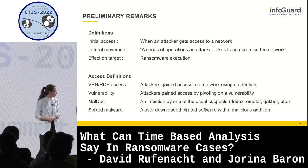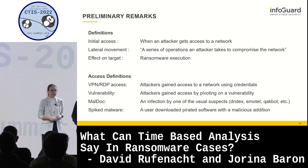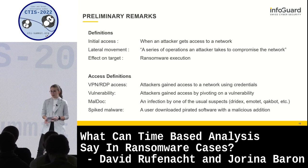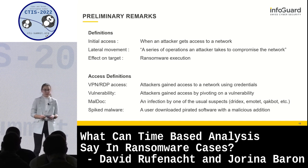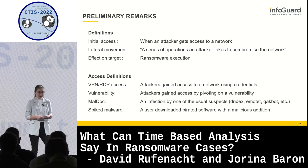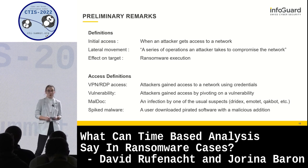We also defined some access methods. First, VPN and RDP access: when the attacker gains access using credentials - we didn't focus on how they got the credentials. Then vulnerability: attackers gained access by pivoting on a vulnerability. With Maldoc, we summed up infections by usual suspects such as Trickbot, Emotet, Qakbot, etc. And finally, for cases like Raccoon Stealer - when the user downloads pirated software - we created a group called Spiked Malware.